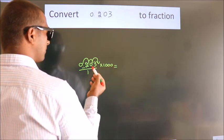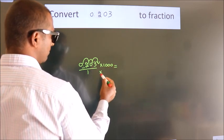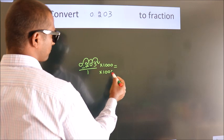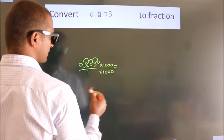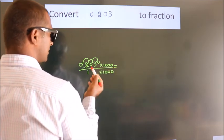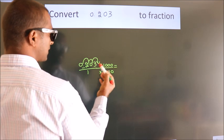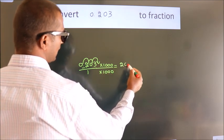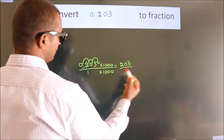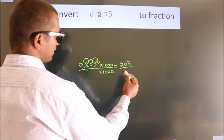Whatever you are multiplying in the numerator, in the denominator also do the same. So, 0.203 into 1000 equals 203. And 1 into 1000 equals 1000.